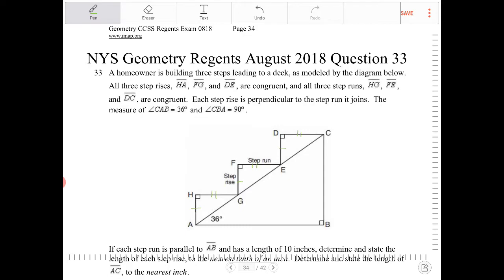Each step rise is perpendicular to the step run it joins. The measures of angle CAB, so CAB is 36 degrees as it is already labeled, and CBA is 90 degrees as it is already labeled.